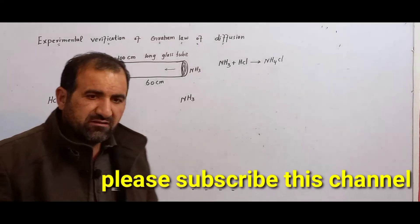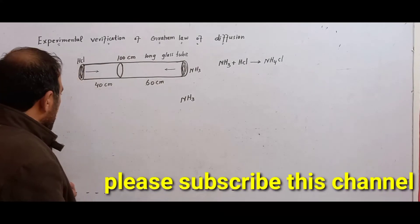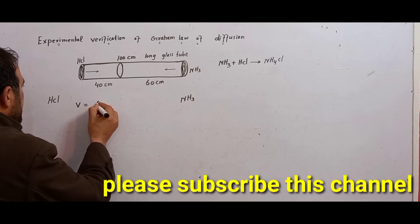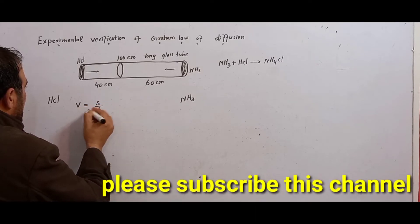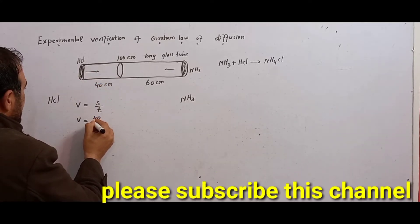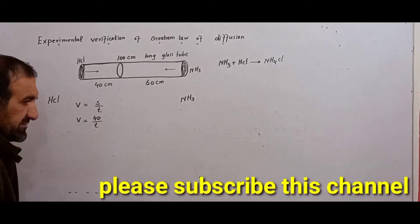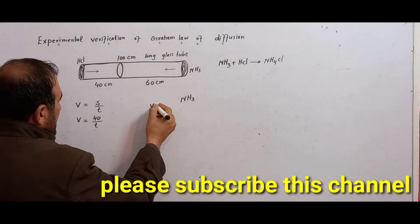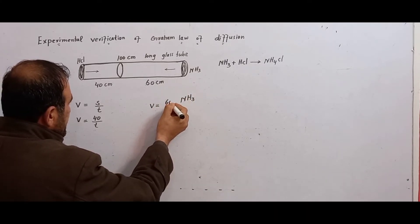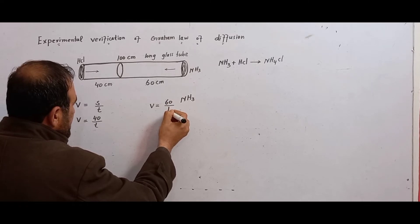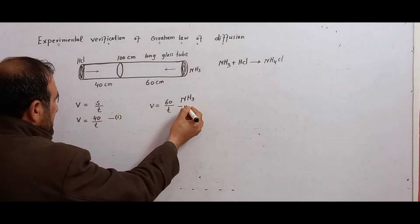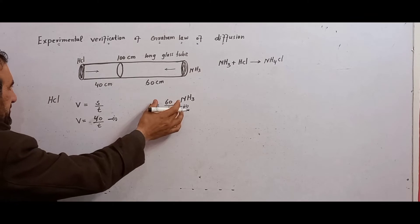From physics, velocity V is equal to distance S divided by time t. The speed of HCl is 40 divided by t (Equation 1), and the speed of NH3 is 60 divided by t (Equation 2).